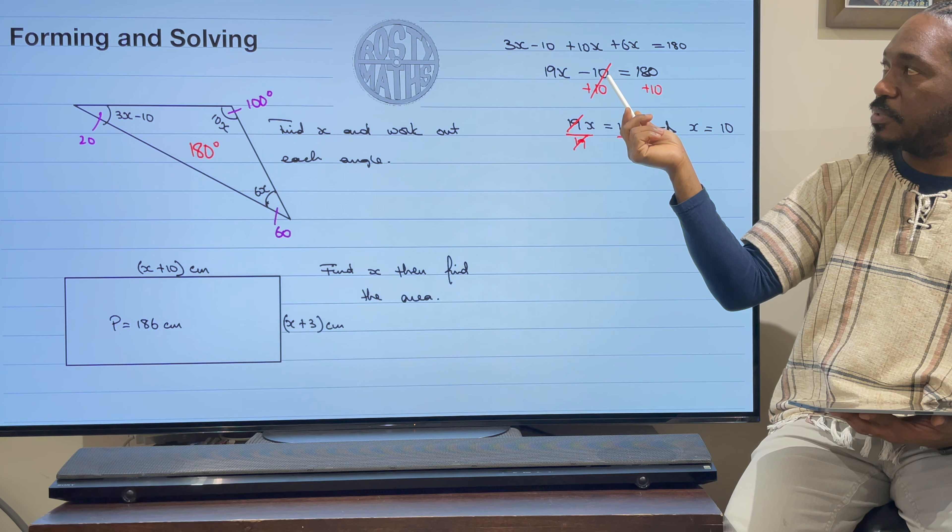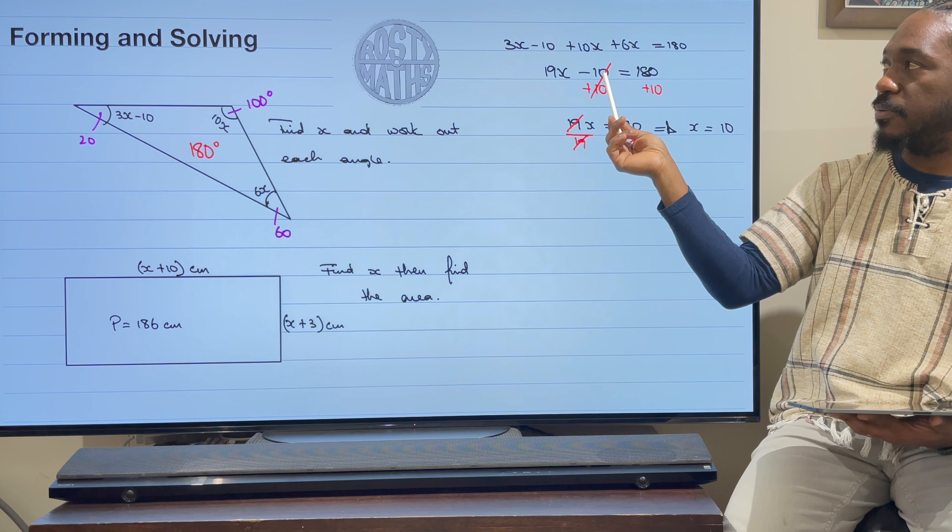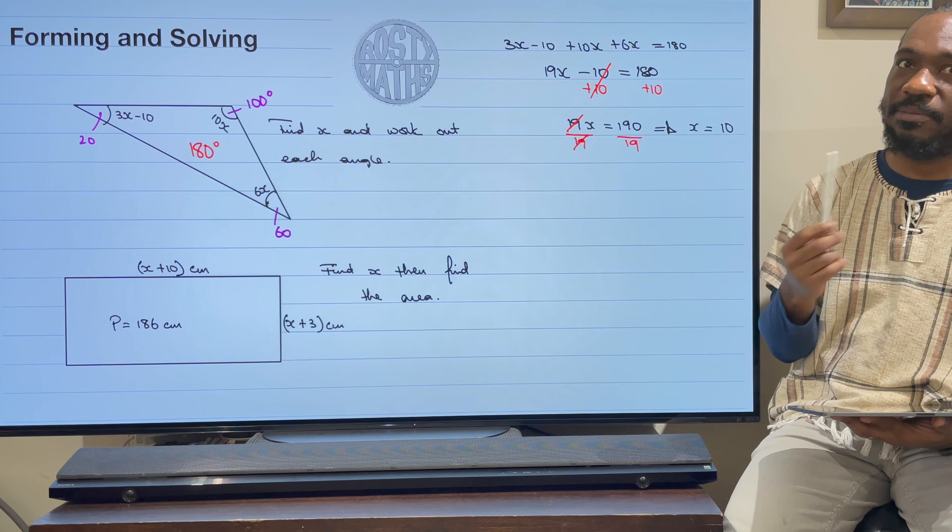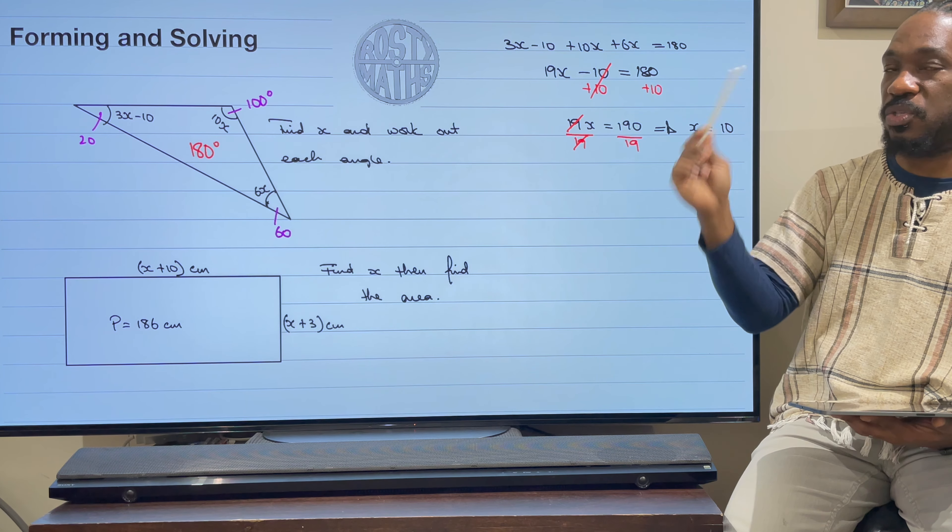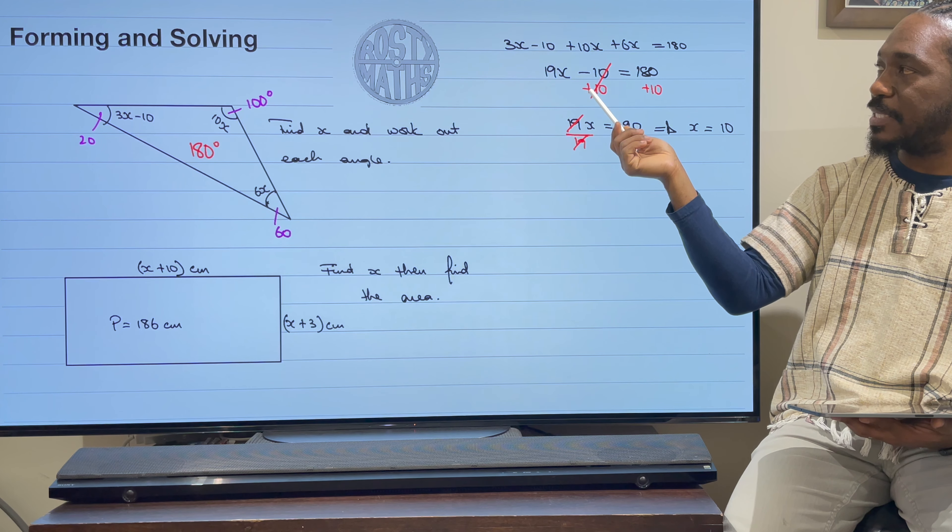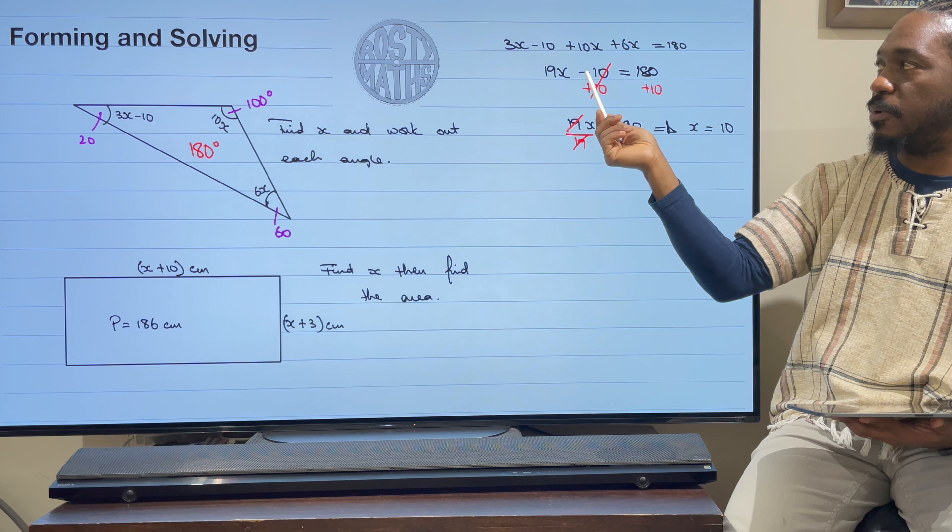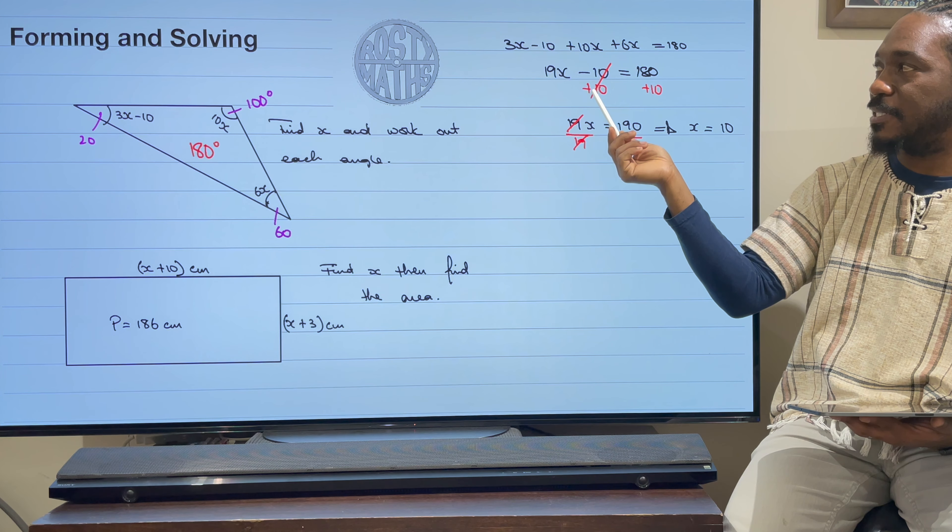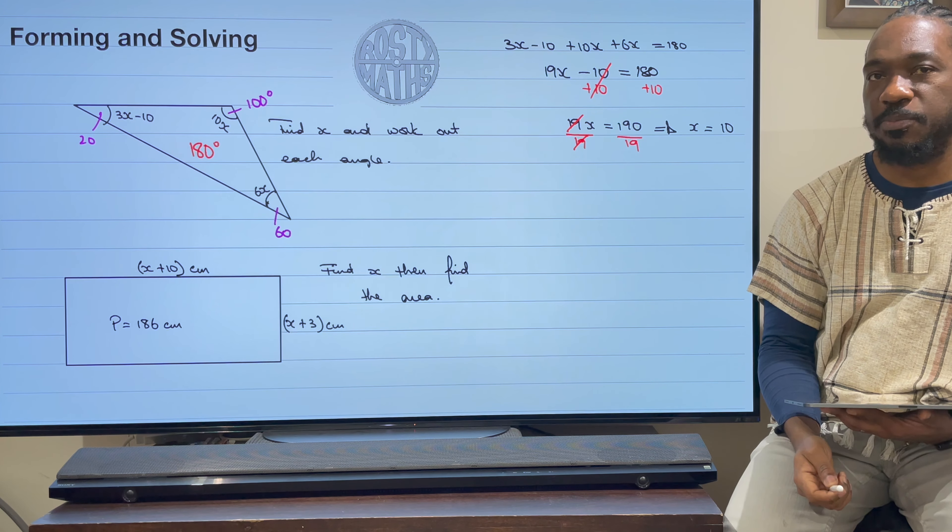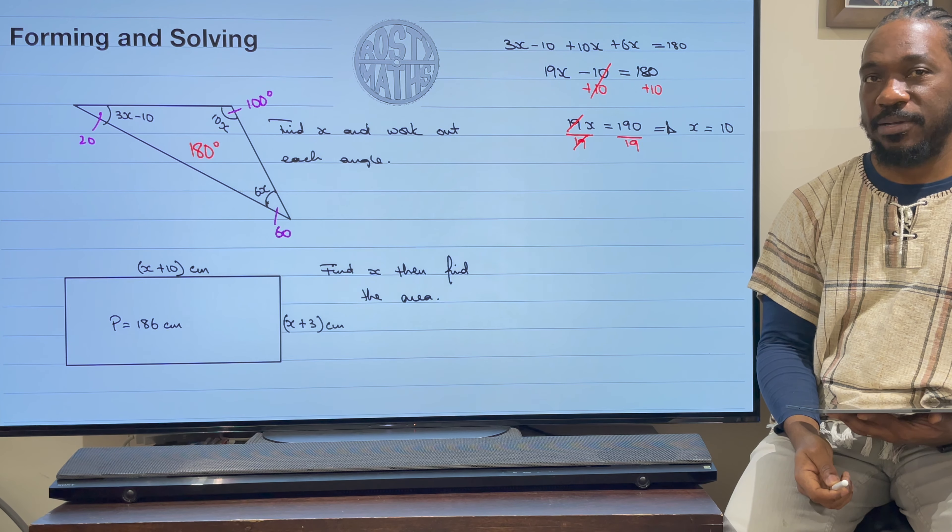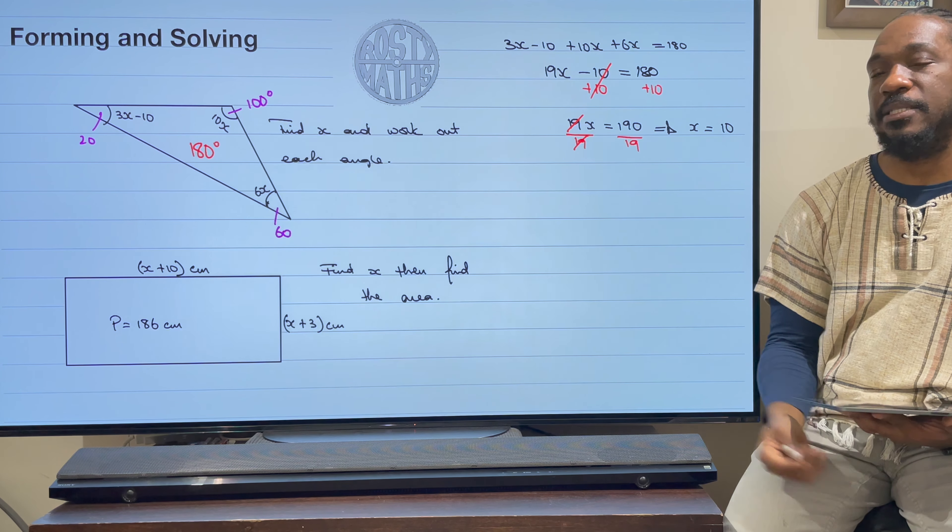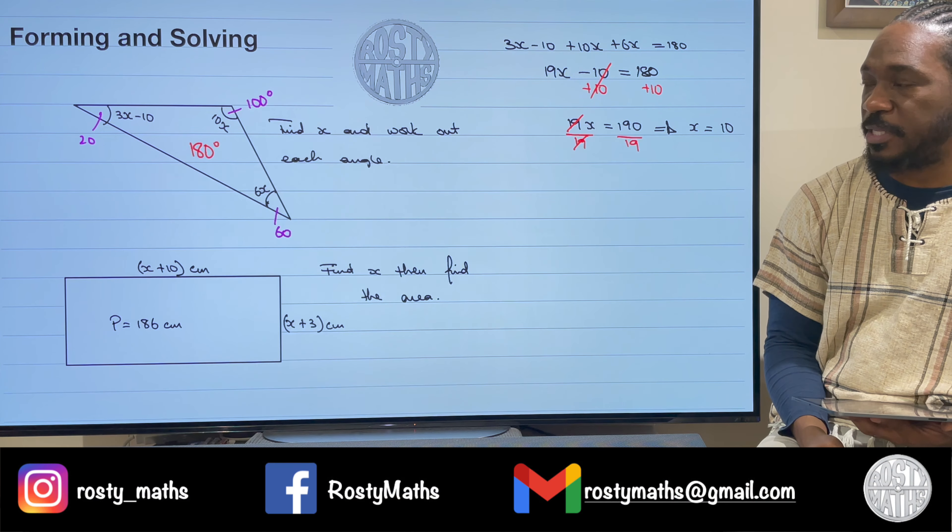And then once I've done that, I have then used the balancing method to find out what x is in solving this equation. We covered that in the first video in this section where we solved equations. Now, how do I know I need to add 10? I use the inverse operation. So the opposite of taking away is add. So I added here and I added 10 there. That cancelled out that 10, and then everything else is pretty straightforward after that. If there's anything you think I've missed or anything I could have done a little bit better, please feel free to leave it in the comments below. Comments are always welcome.